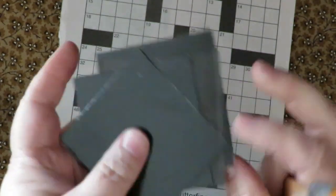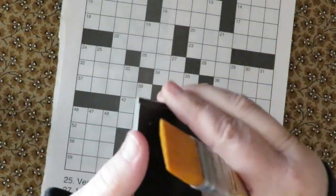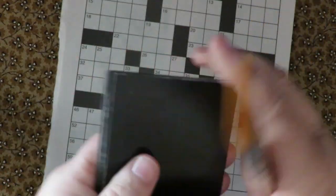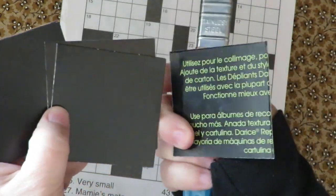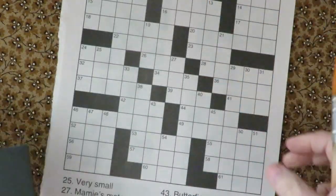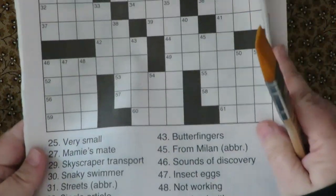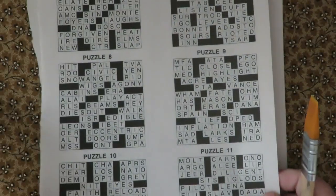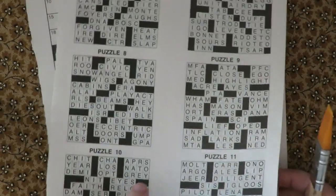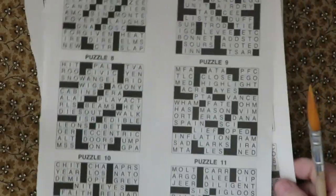To cover up the back side you can use any type of paper that you'd like. It can be scrapbooking paper, napkins, old book text. What I'm choosing to use is some crossword puzzle pages that came out of a book from the dollar store. So I'm going to use crossword paper to cover the back side of my cardboard.